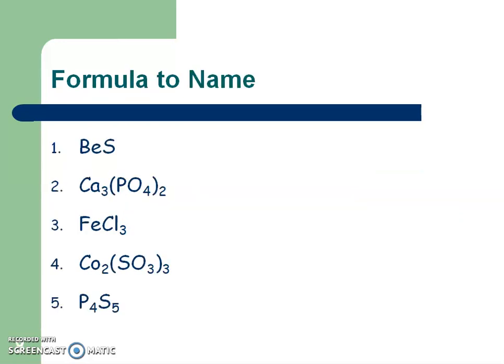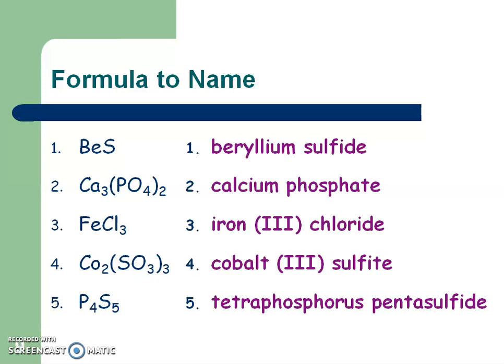Pause the video, try these five, then play to get the answers. A couple of things to think about: did the compound start with a metal or a non-metal? If it started with a metal, check for multiple charges using that ion cheat sheet. If it started with a non-metal, you should have those prefixes well-known and just use your normal periodic table. Here are your answers — pause and look them over.